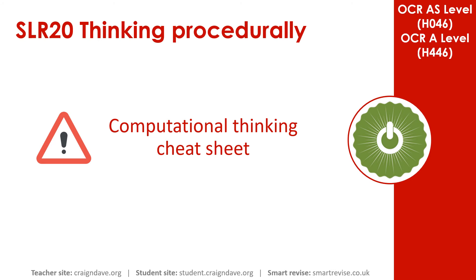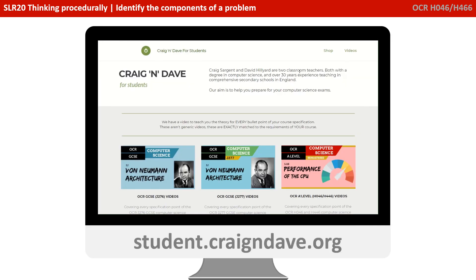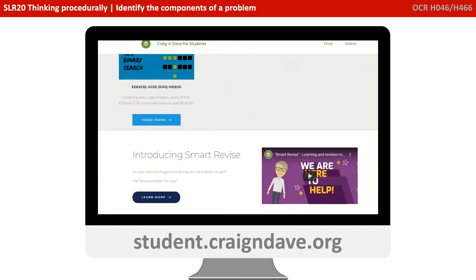To help get your head around everything to do with computational thinking, we have a freely available downloadable cheat sheet. It's got two sides to it — a basic poster that reminds you at a top level what the five different strands are, and on the back there's a much more detailed explanation. This resource is completely free from student.craiganddave.org.